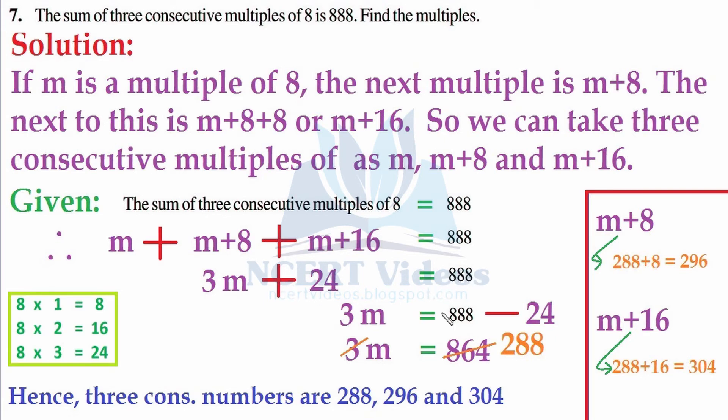3m as it is, transposing positive 24 towards the right side, it will become negative. So equals to 888 as it is minus 24. 3m equals to, when you subtract it, you get 864. Using the cancelling opportunity on the numerator, when we divide 864 by 3, everything gets cancelled out. So we are left with m on the left hand side alone, and its value is 288.